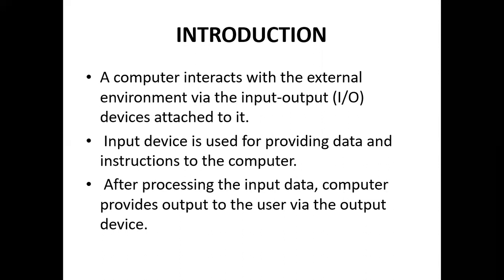For example, when you are sending a message via WhatsApp, as you type using your keypad you are using an input device to enter data. After entering the data, you press the send button — you have given the instruction on what the computer should do. After processing, you receive feedback via an output device; for example, on WhatsApp you might see those two ticks showing the message has been delivered.